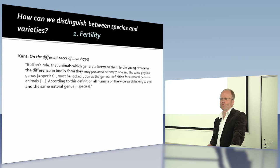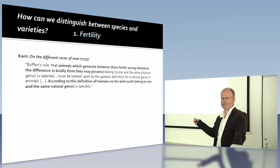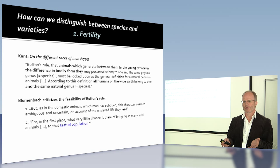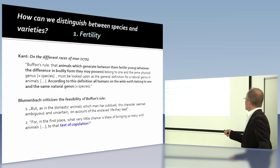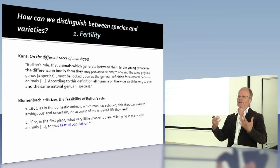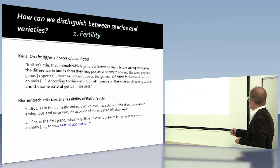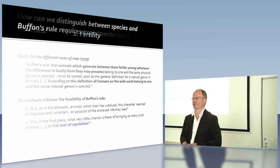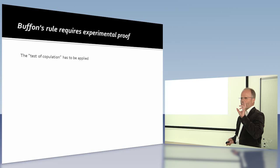But why would Blumenbach write a big book of 200 pages if the question is so easy to answer? Because, he says, while he is completely in agreement with Kant and Buffon, how can we prove this? It's not feasible. First, with domesticated animals, because of differences of environment, there could be changes that disturb the natural situation. And humans are a domesticated animal for Blumenbach. Second, we would have to bring all these animals to a test of copulation — we have to prove it empirically.